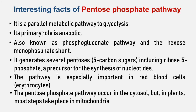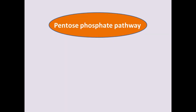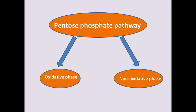For most organisms, the pentose phosphate pathway takes place in the cytosol, but in plants most steps happen in mitochondria. Let us discuss the pathway in detail. Now we are ready to enter the first of the two phases of the pentose phosphate pathway: the first is the oxidative phase and the second is the non-oxidative phase.